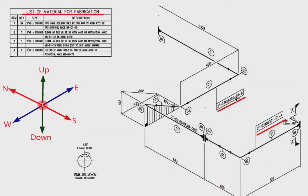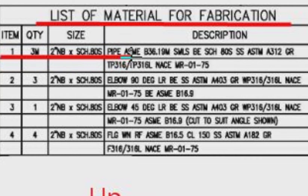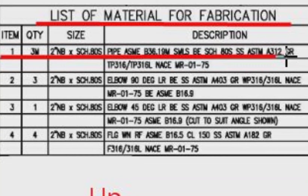Let's learn the materials used in the pipeline. Detail number one was used in several places in the pipe drawing. Looking at the material list: item number one, the quantity is 3 meters, 2 inches schedule 80S pipe, ASME schedule 80S. The material is stainless steel.